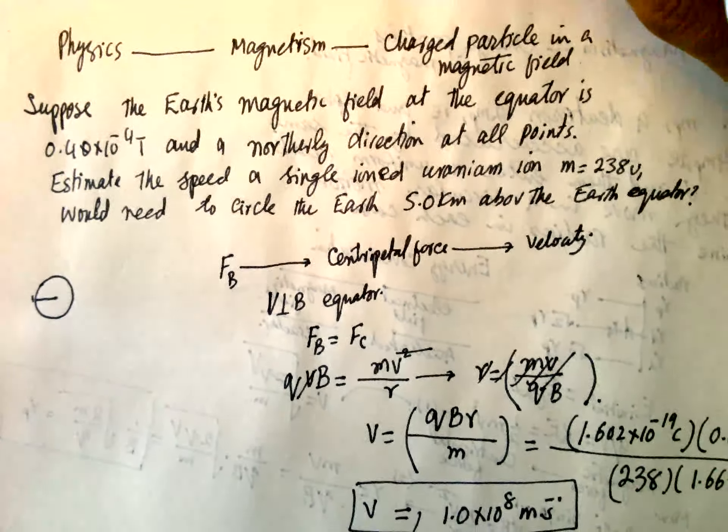So V is perpendicular to the B at the Equator. So FB is equal to FC, centripetal force.